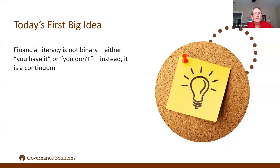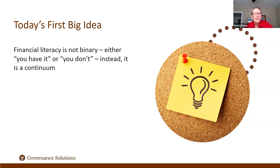So the first big idea is maybe a little revolutionary: financial literacy is not a binary thing. Often when we're approached with financial literacy — and I know sometimes regulators can be accused of this — they view it as a binary thing: either you are financially literate or you're not. But instead, like all types of literacy, whether it's reading and writing, arithmetic, or technology, it's not binary at all. It's a journey, a continuum that everybody is at a particular place on.